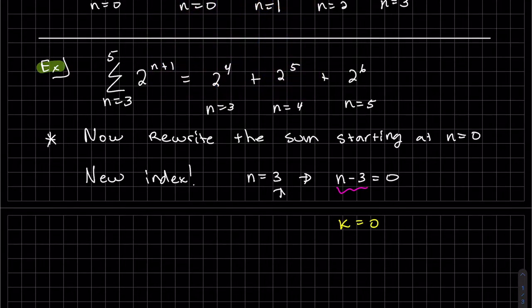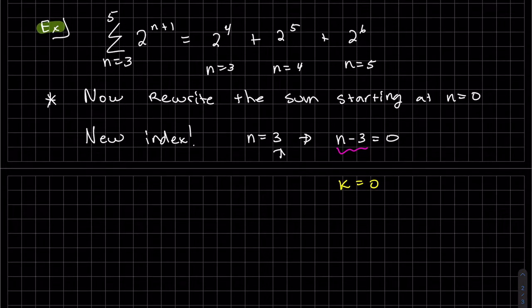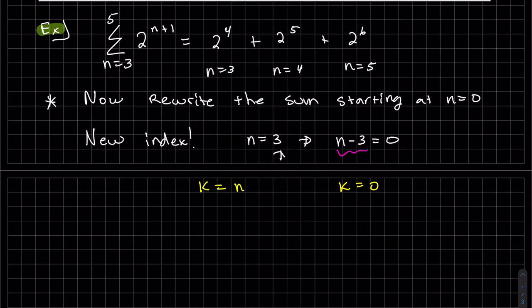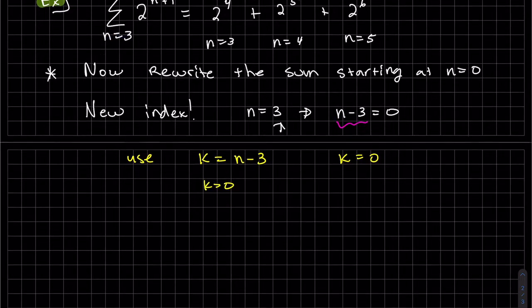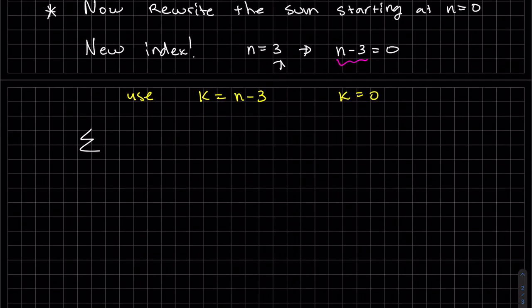And so here we will call this k, k equals 0. So we can see k is equal to n minus 3. That's what we're gonna use. And just to double check, we use this. We plug in n equals 3 and then we get k equals 0 as my starter.